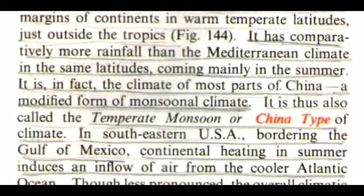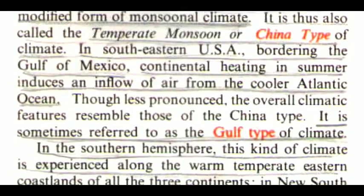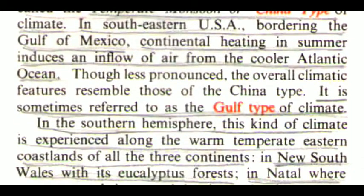In southeastern USA, bordering the Gulf of Mexico, continental heating in summer induces an inflow of air from the cooler Atlantic Ocean. Though less pronounced, the overall climatic features resemble those of the China type. It is sometimes referred to as the Gulf type of climate.